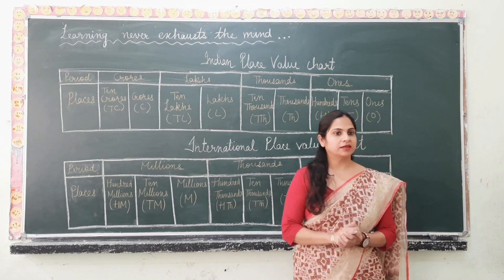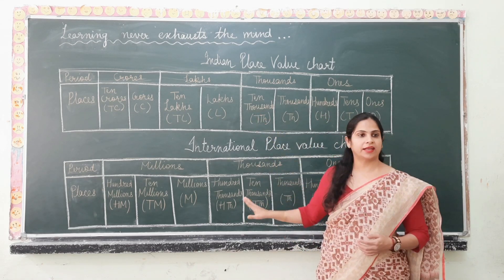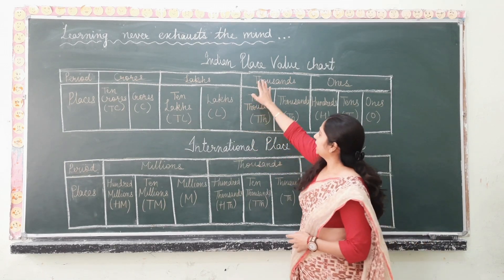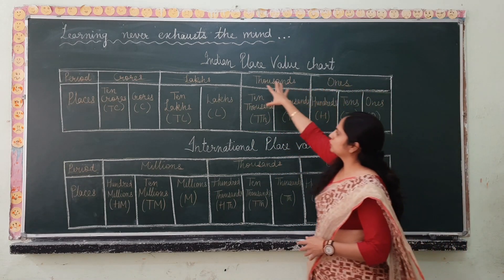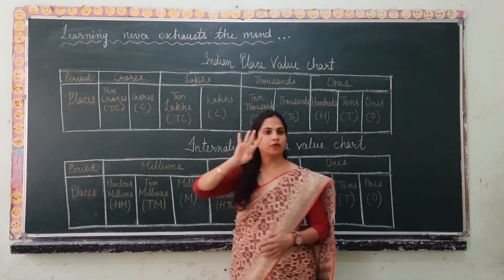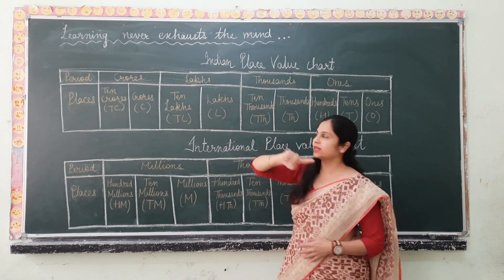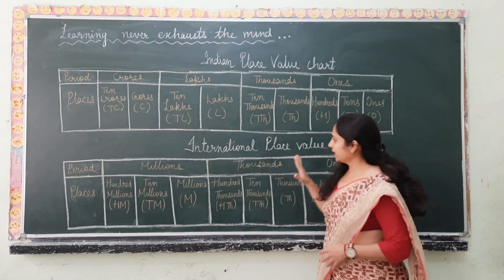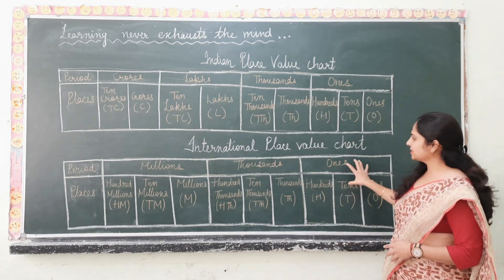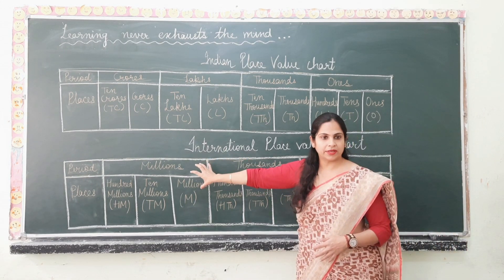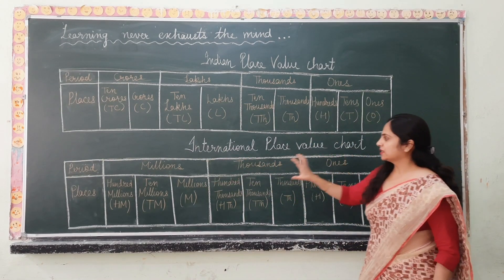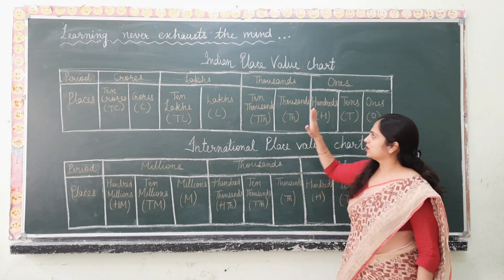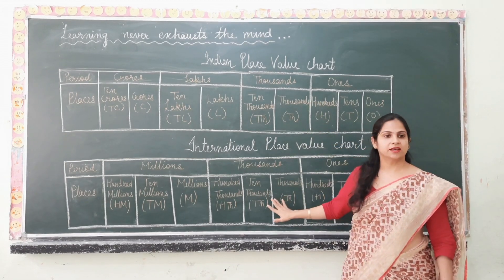Now let's understand the difference between the Indian place value chart and the international place value chart. The Indian place value chart has 4 periods: ones, thousands, lakhs, and crores. The international place value chart has 3 periods: ones, thousands, and millions. That is the first difference — Indian has 4 periods and international has 3 periods.